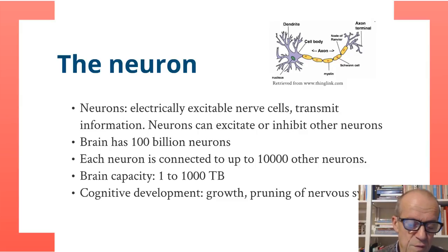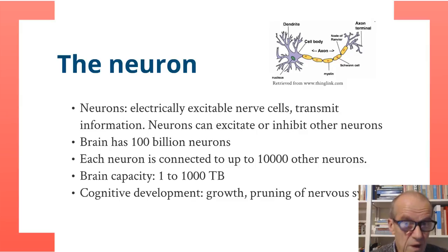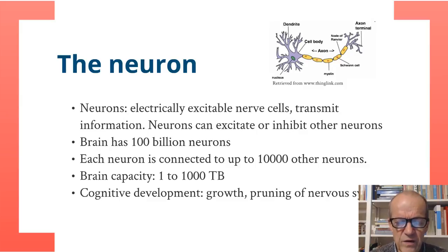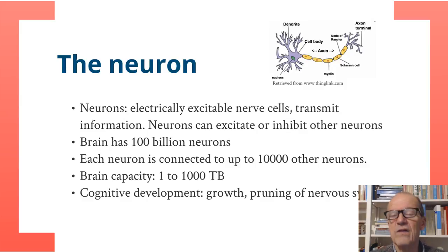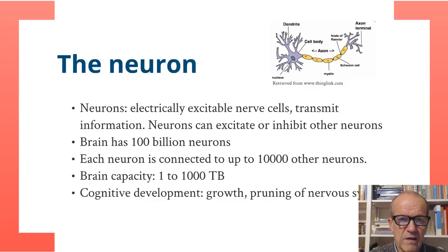There is a calculation of the capacity of the human brain, which is something like between one and 1,000 terabytes — quite a lot. Cognitive development is a matter of growing the brain and the human nervous system, developing new neurons and structures, but also of pruning — meaning some connections are ended in order to make the human nervous system fit for the purposes it has to serve. Both growing and pruning make it a very flexible and determined system.